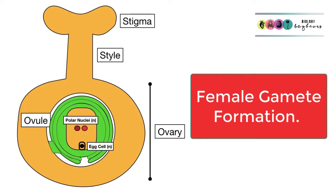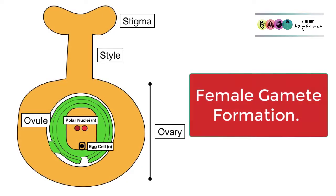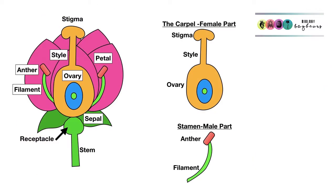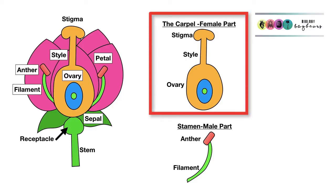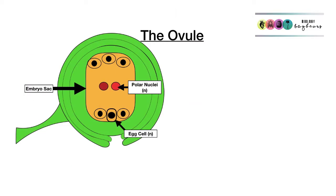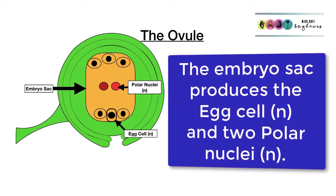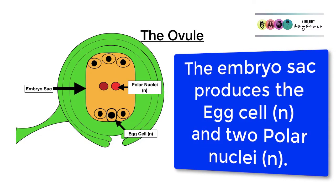This video covers female gamete formation and is part of the chapter on sexual reproduction in flowering plants. The best place to start is the structure of the flower. The female reproductive organ is the carpel, made up of the stigma, the style, and the ovary. Within the ovary is the ovule, and it's within the ovule that the embryo sac forms, producing the egg cell and two polar nuclei.